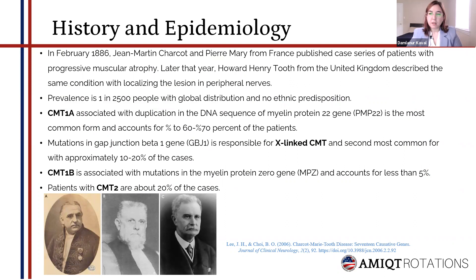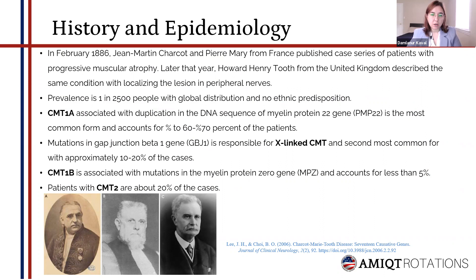In February 1886, Jean-Martin Charcot and Pierre-Marie, his student from France, published a case series of five patients with progressive muscular atrophy. Later that year, three months later, Howard Henry Tooth from the United Kingdom described the same condition, localizing the lesion in peripheral nerves. Tooth was the first to attribute symptoms correctly to neuropathy rather than myelopathy. In 1968, CMT was subdivided into two types — CMT1 and CMT2 — on the basis of pathological and physiological criteria.